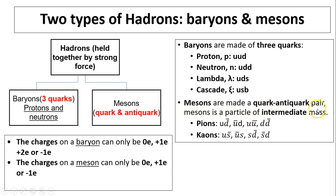Mesons are made of quark and anti-quark pairs. Mesons are particles of intermediate mass. Pions: up and anti-down, or anti-up and down, or up and anti-up, or down and anti-down. So those are all different kinds of pions. And there are also different kinds of kaons. Those are pretty famous mesons.